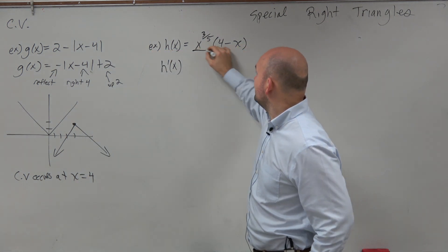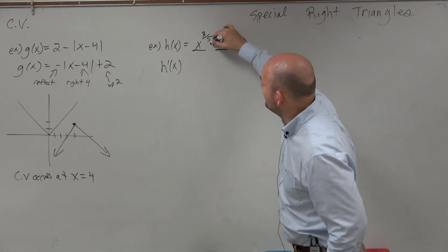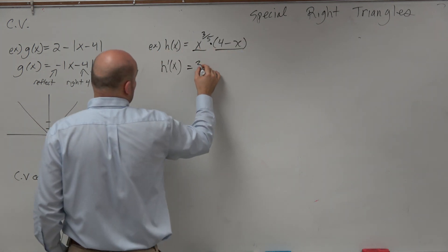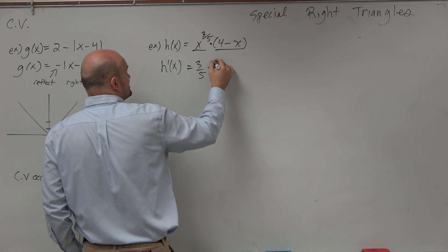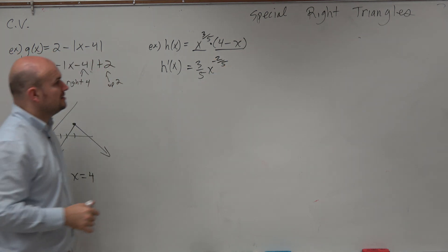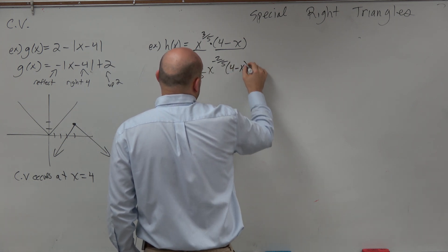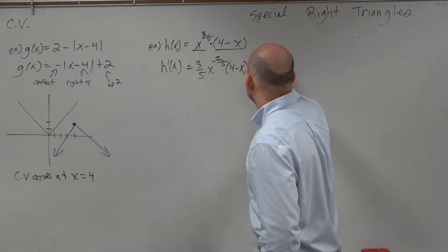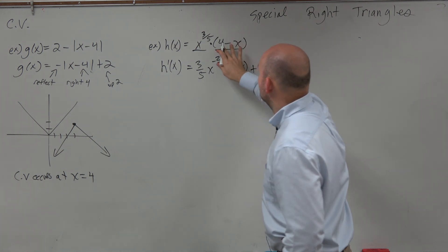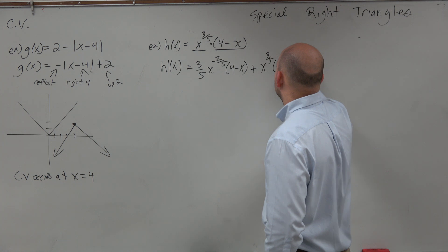If we're going to take the derivative, we have our two terms separated by a product. So the derivative of my first term — I'm going to bring down 3/5 times x to the negative 2/5, times (4 minus x). And then that's going to be plus x to the 3/5 times the derivative of (4 minus x), which is negative 1.